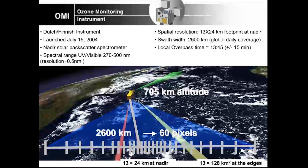Here are some details of the Ozone Monitoring Instrument. The instrument is like a digital camera with many pixels. The pixels looking straight down at Earth's surface have a spatial footprint of 13 by 24 km² at nadir. However, on the edges, pixels can become quite large — 13 by 128 km², for example. You need to be very careful when interpreting or analyzing the data to understand the spatial resolution and how it changes across the overpass.